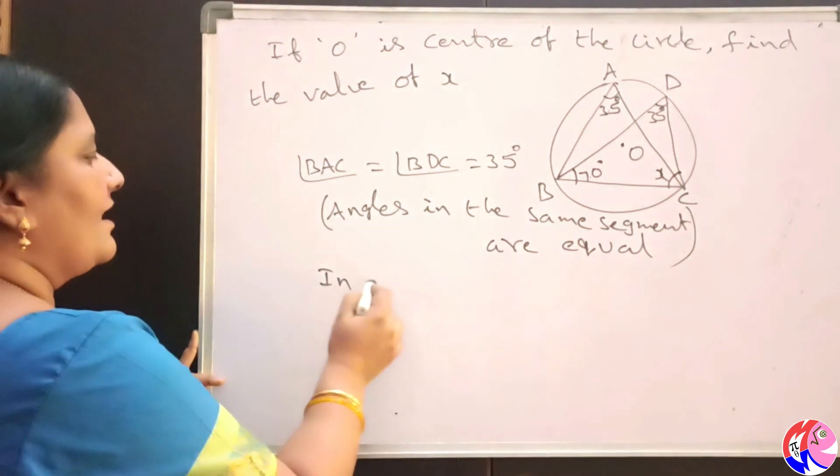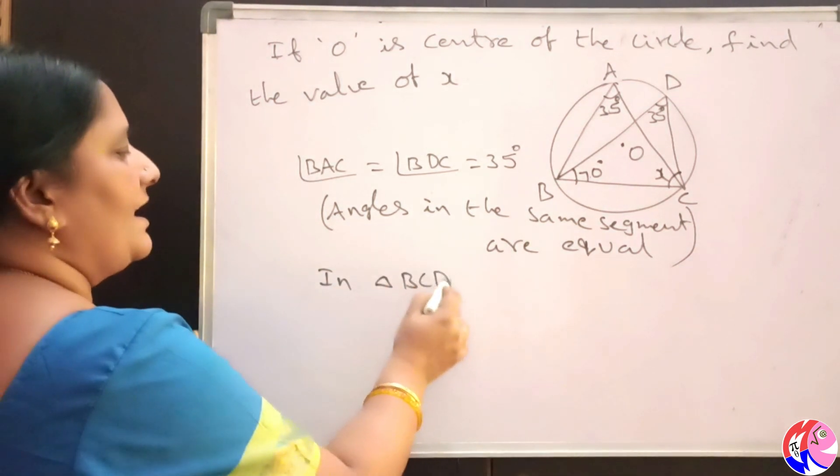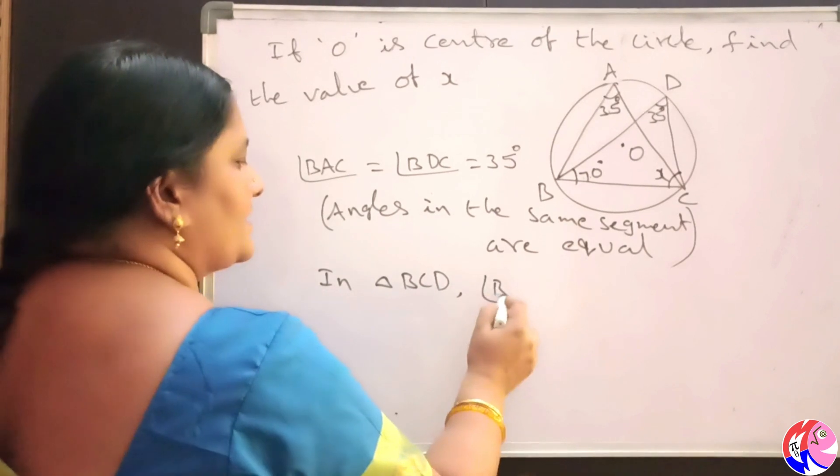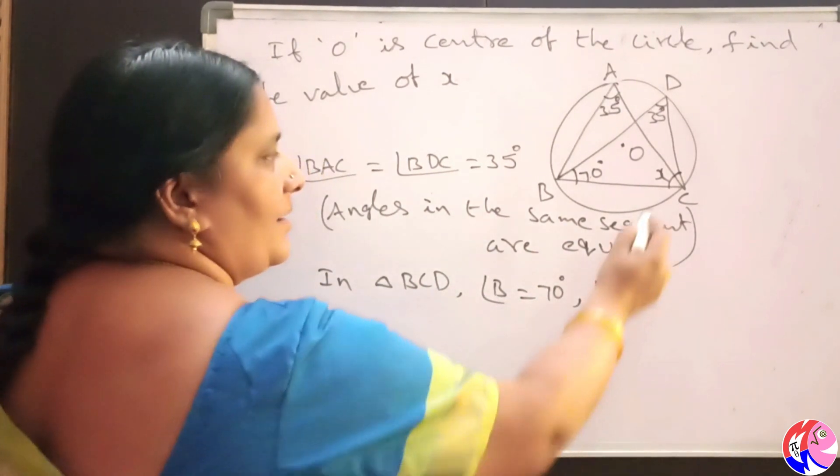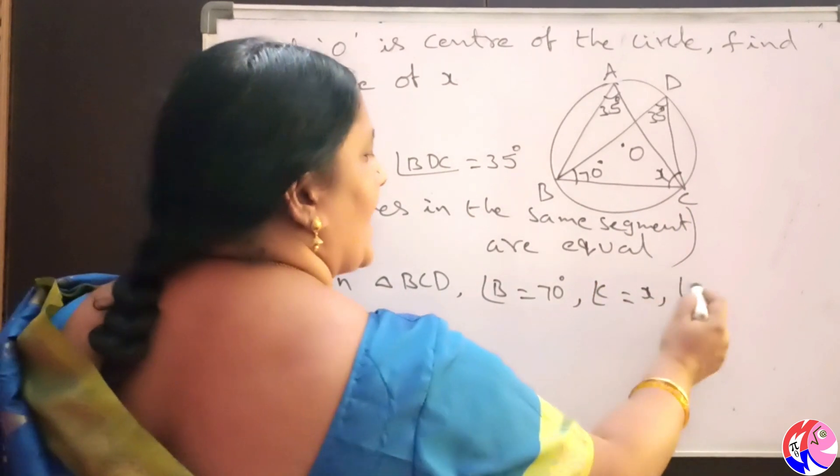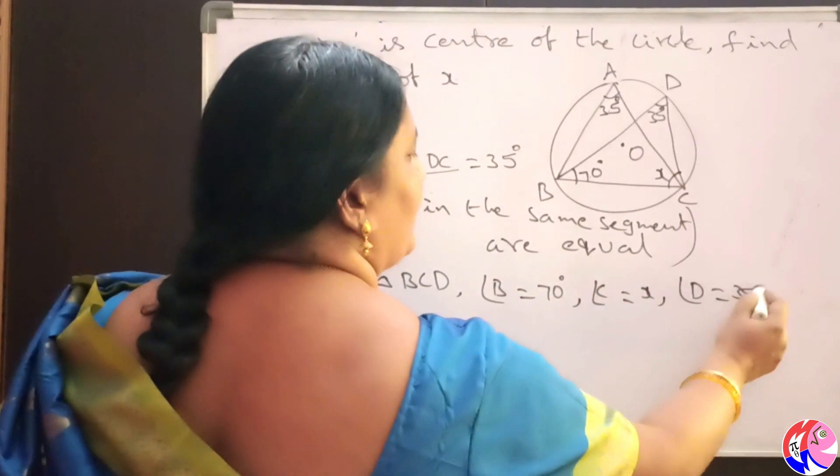In triangle BCD, angle B is equal to 70 degrees, angle C measure is x, angle D equal to 35 degrees.